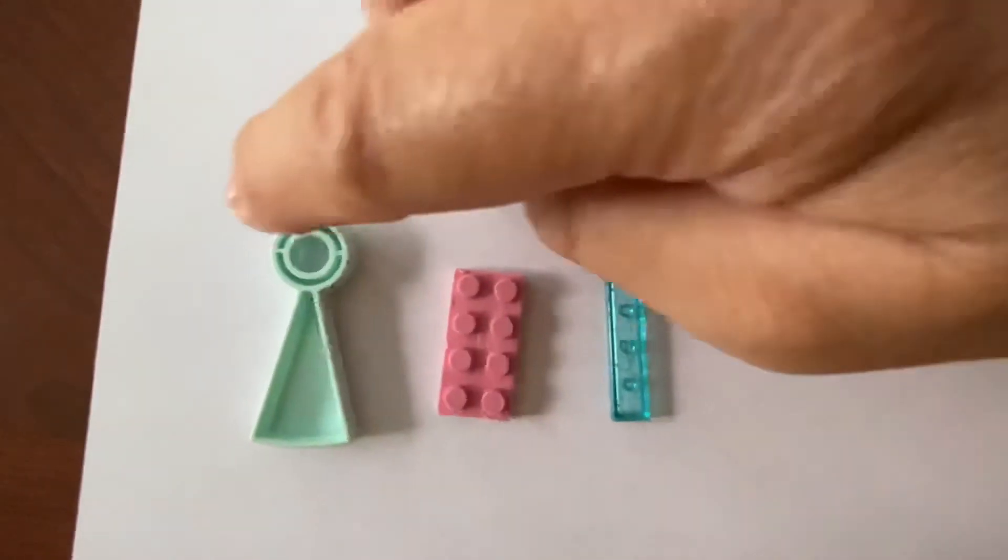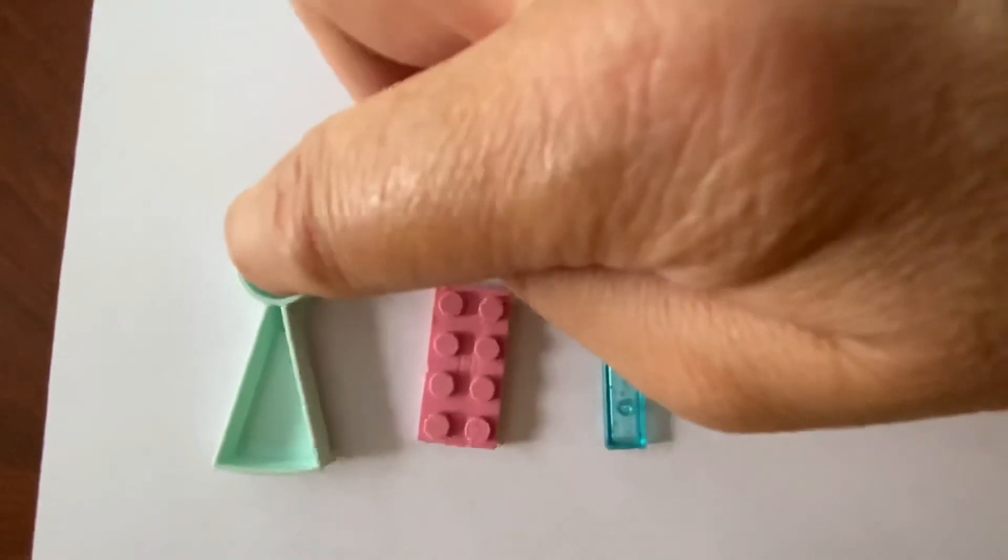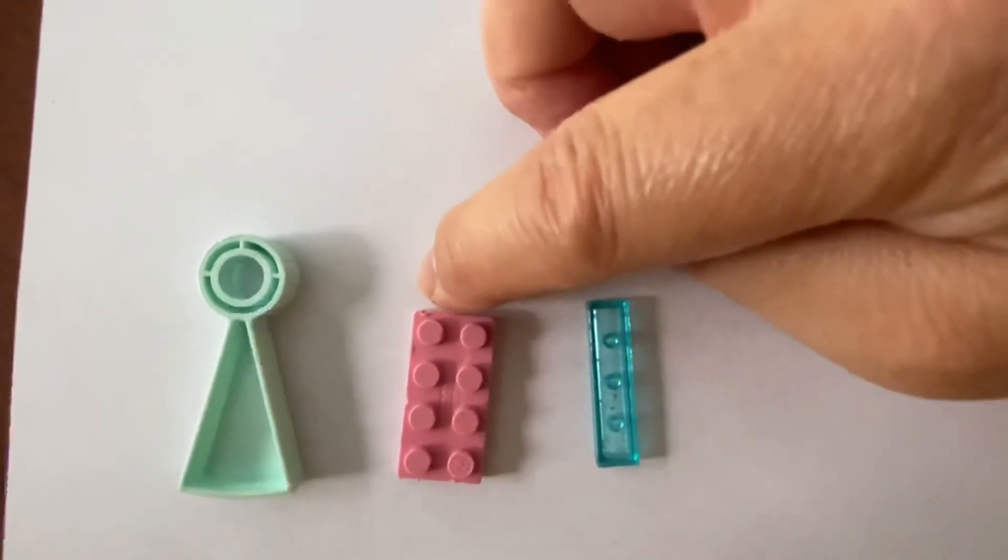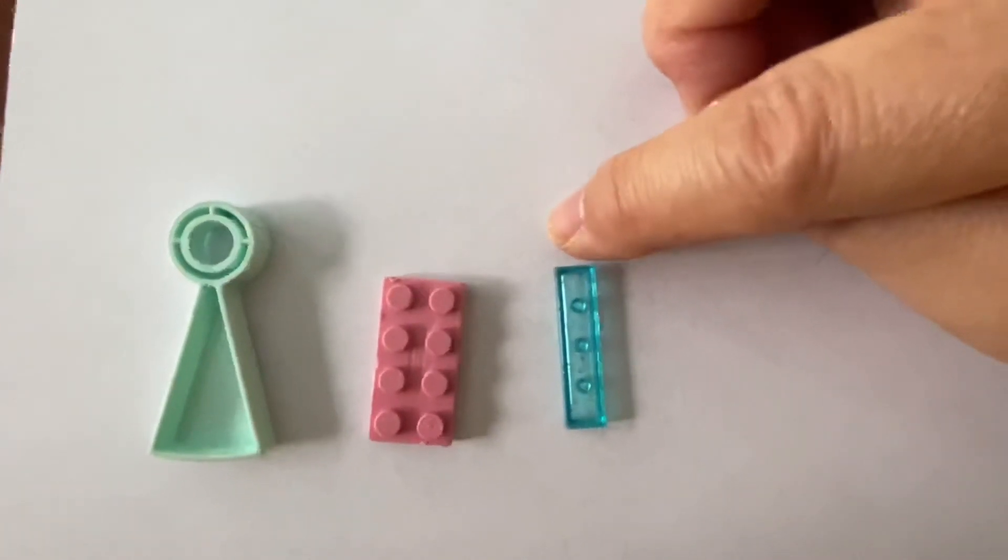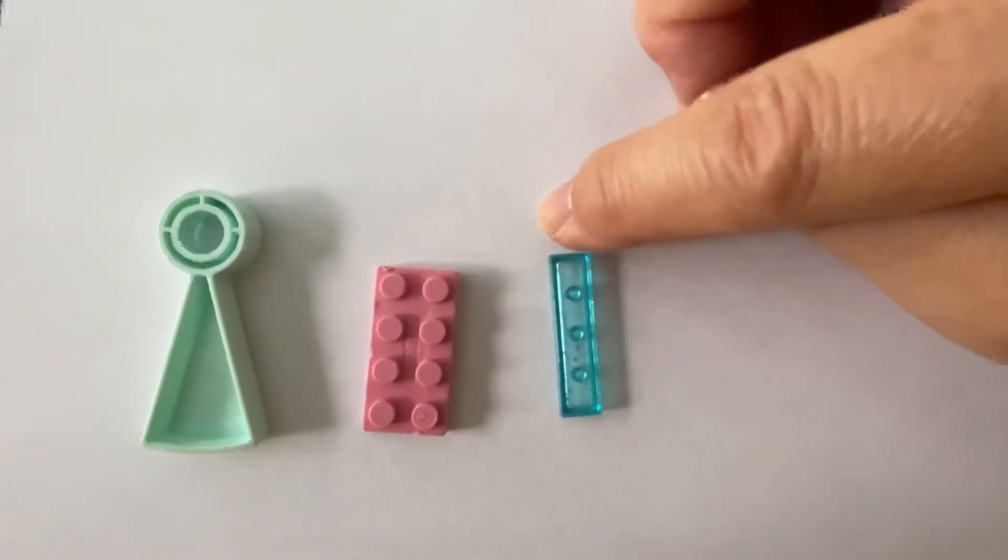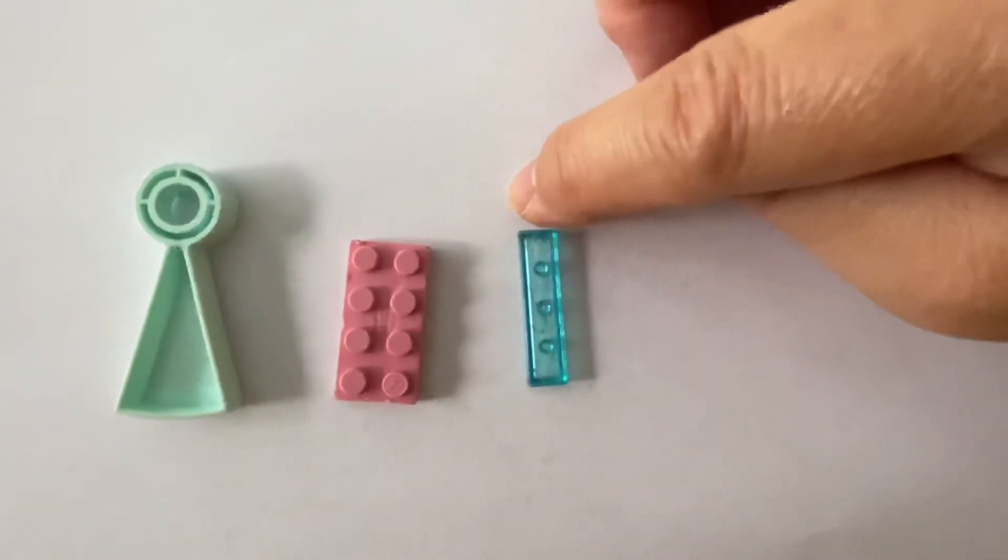So all the blocks that look like this are going to be A's. All the blocks that are pink that look like this are going to be B's. And all the blocks that look like this are going to be C's. Let's see if I can extend this pattern.